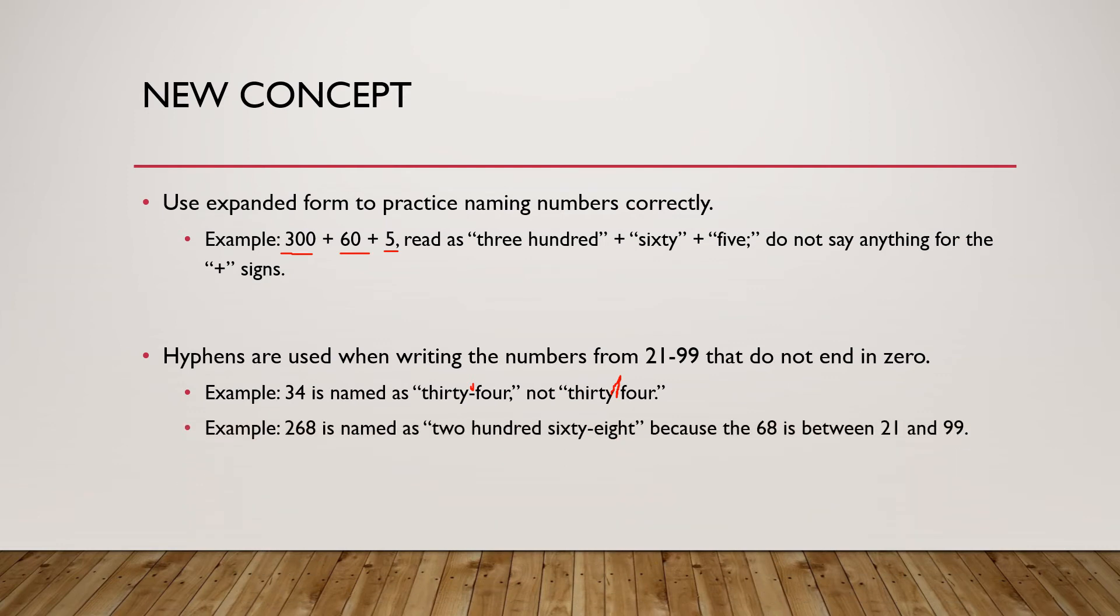Here's another example: 268. Notice there's a hyphen between the sixty and the eight, because 68 is between 21 and 99, but 200 does not have a hyphen in between it, because that's more than 99.